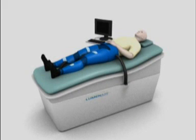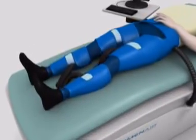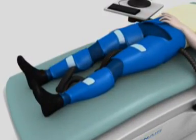During EECP therapy, the patient lies on a treatment table with large blood pressure-like cuffs wrapped around the patient's calves, thighs, and buttocks.